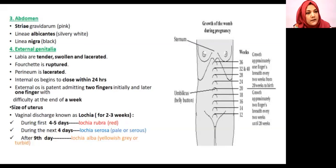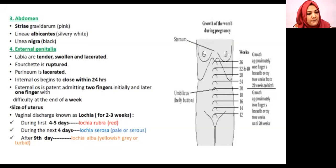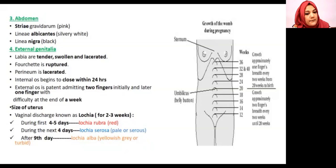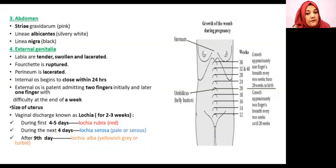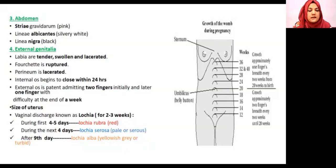In the first four to five days the lochia is red because of the products of conception epithelium being expelled. In the next four days it is pale and serous because of white blood cell production and remaining epithelial cells. From the ninth day it is yellow-gray and turbid in normal color, which indicates there is no infection. The discharge is alkaline in nature.